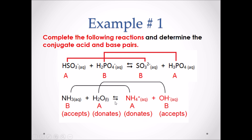Notice how the charges of the two products differ. NH3 was originally neutral (charge of zero); once it gained a hydrogen to form NH4+, it became +1. H2O was originally neutral with a charge of zero; once it lost a hydrogen, it lost a positive charge, becoming OH-.